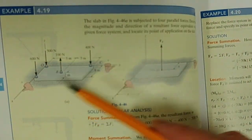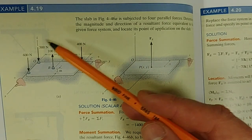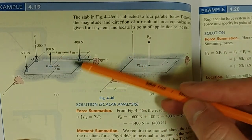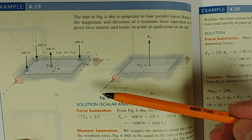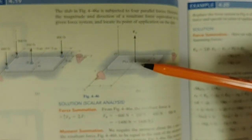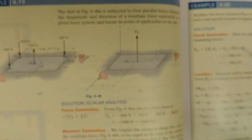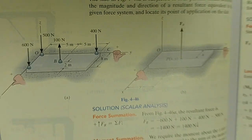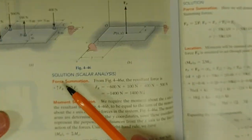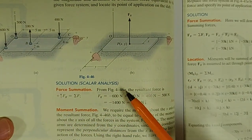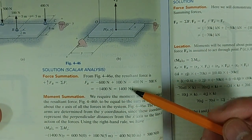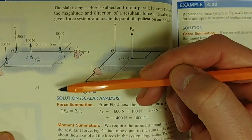So we've got this parallel force system, and what we want to do is replace it with an equivalent system. If we've got a bunch of forces like this, they have a specific external effect, and we can replace this whole system with a single force acting at a certain point. The first step always is we sum up all the forces to get FR. If we sum up all these forces, we're going to get minus 1400 Newtons, acting in the negative Z direction.